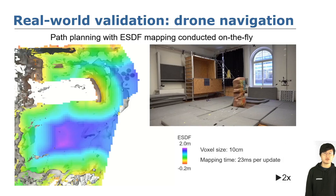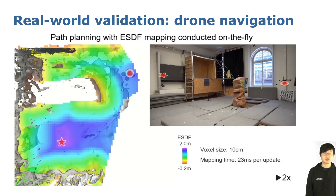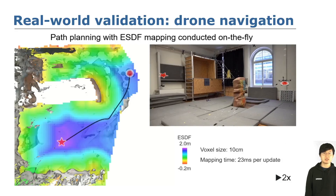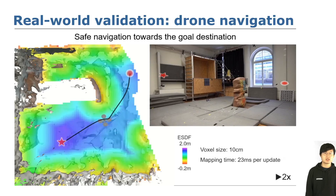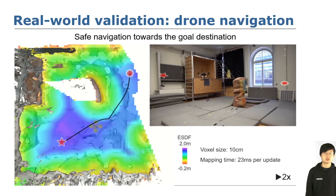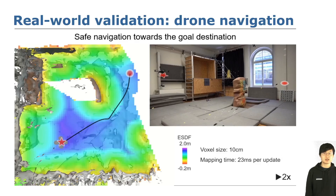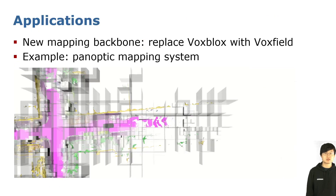Additionally, we validate VoxField's ESDF mapping in a real-world experiment onboard a drone. The drone navigates safely from the red dot to the red star, and all computations are conducted by the drone itself.